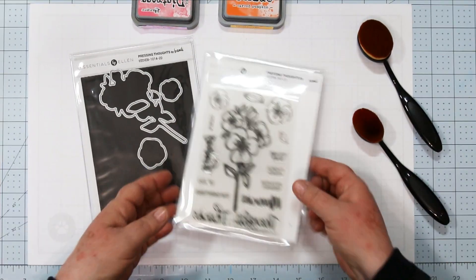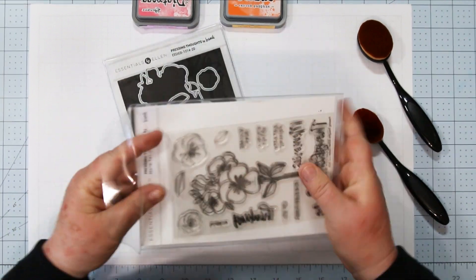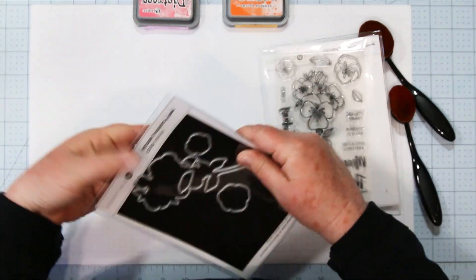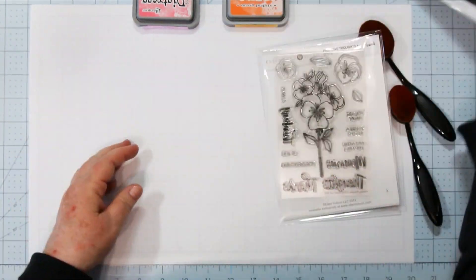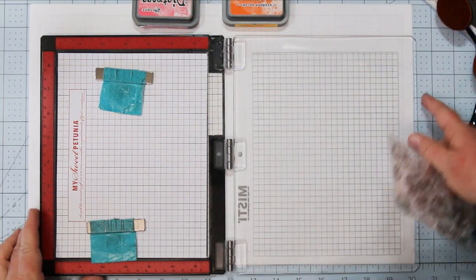Hi there, Sandy McIver here with number seven in the Distressed Oxide inks color combos and cards. I'm working with the Pressing Thoughts bundle from the new Ellen Hutson LLC release. Don't you just love their packaging?